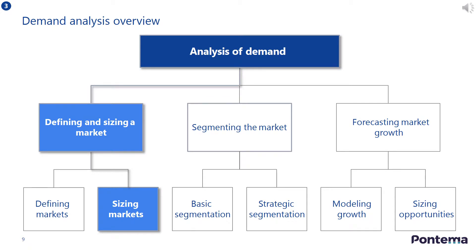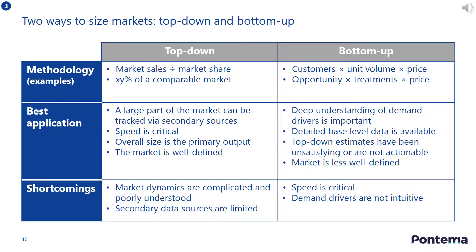Let's now turn your attention to sizing a market. The two common ways to size a market are the top-down and bottom-up approaches. A top-down analysis is calculated by determining the total market sales, then estimating your share of that market. For example, if there are 300,000 people in your market and you manage to secure 5% sales from that market, then you will convert 15,000 sales.